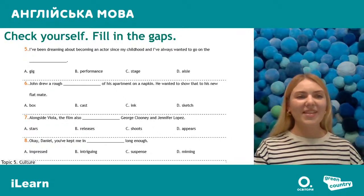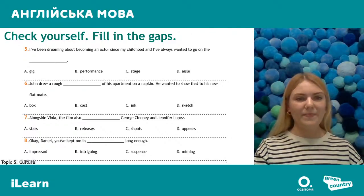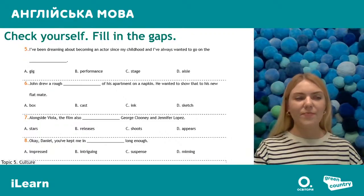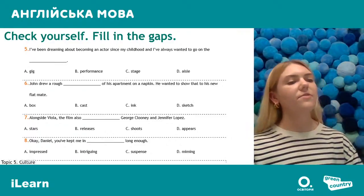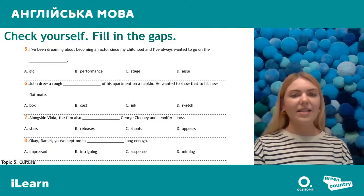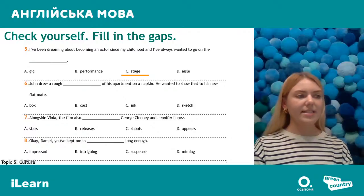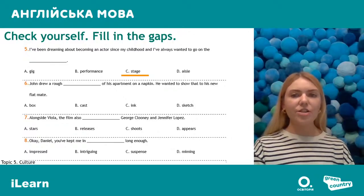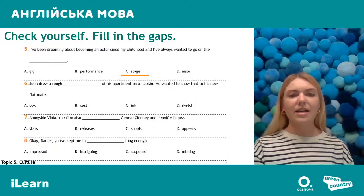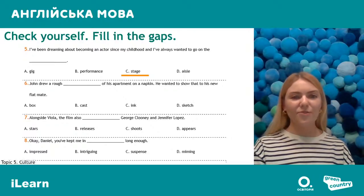Number five: 'I always wanted to go on the...' — the options are gig (концерт), performance (виступ), stage (сцена), and aisle (прохід). The right answer is C — 'stage'. There is a set phrase 'to go on the stage', which means to become an actor. The person wanted not only to go to a gig or a performance, but to become an actor.